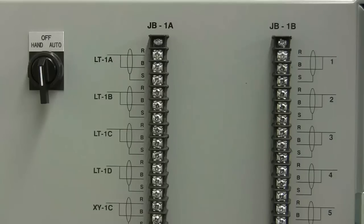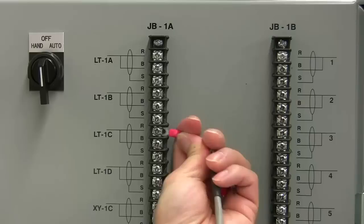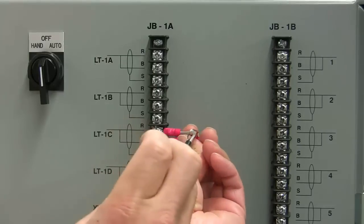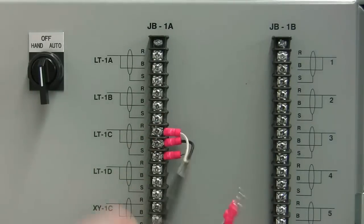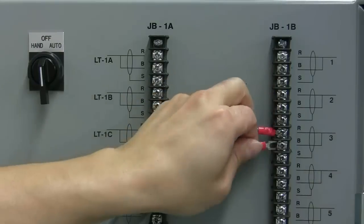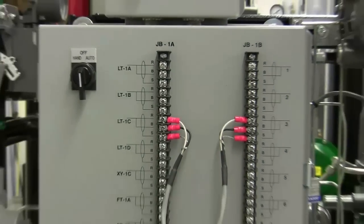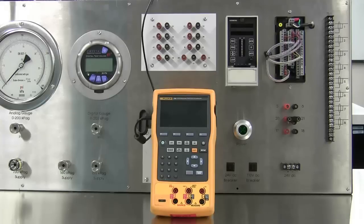To connect the transmitter to the power supply, we need to bring the transmitter from the field to the control room side. To do this, connect LT-1C to one of the conductor pairs on JB-1B. The level transmitter is now connected to TS-1 on cable pair 3.